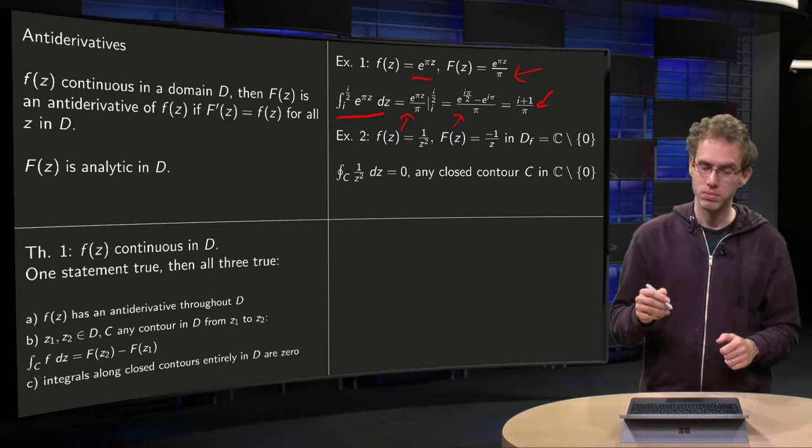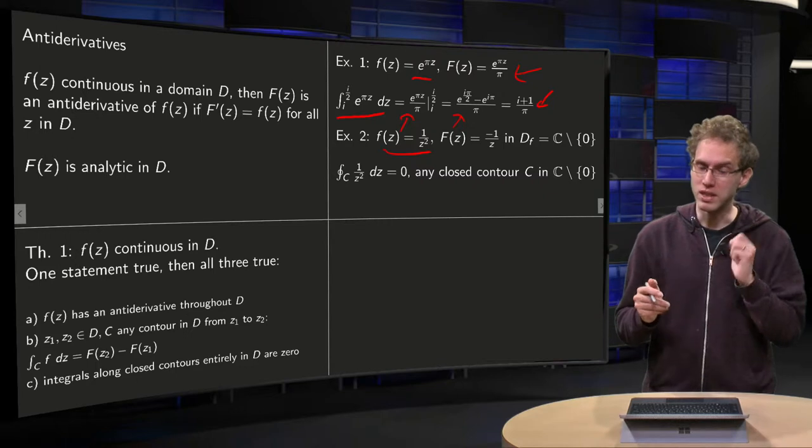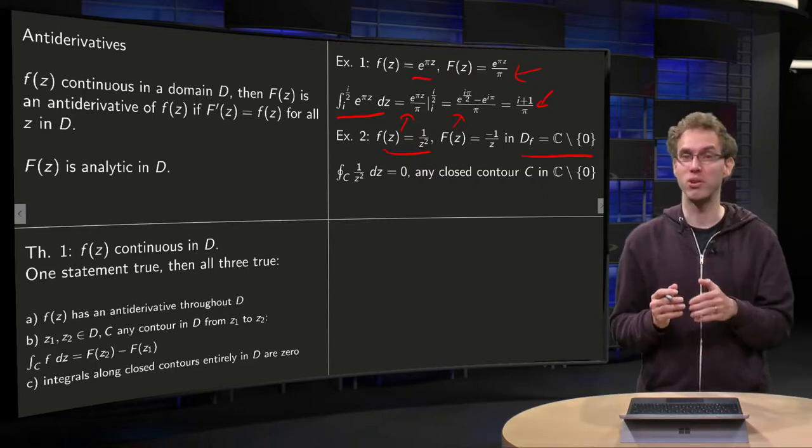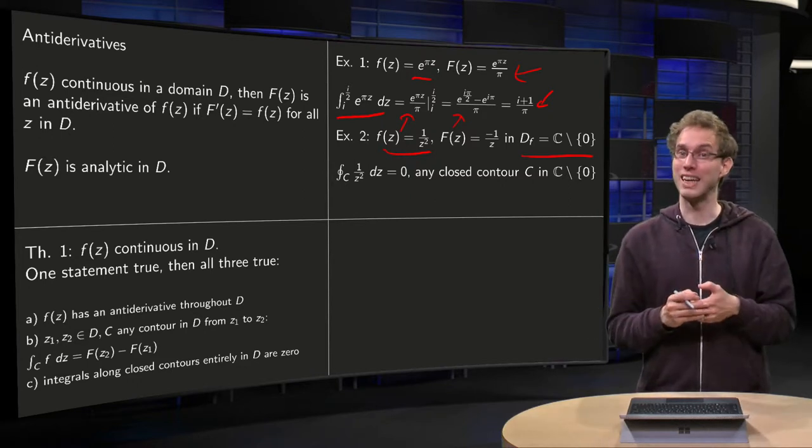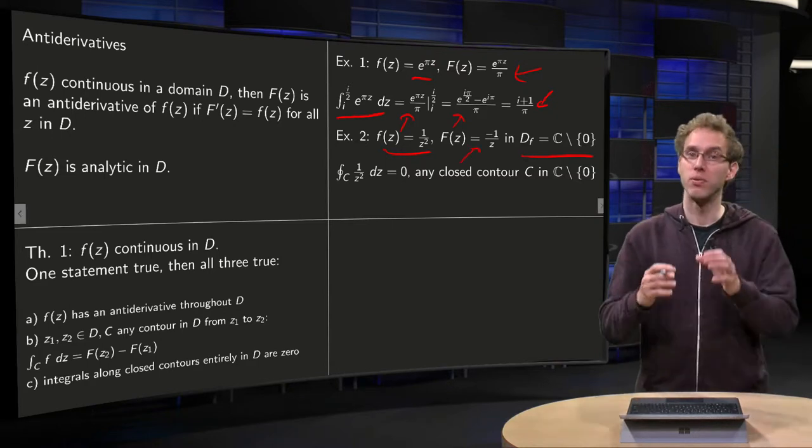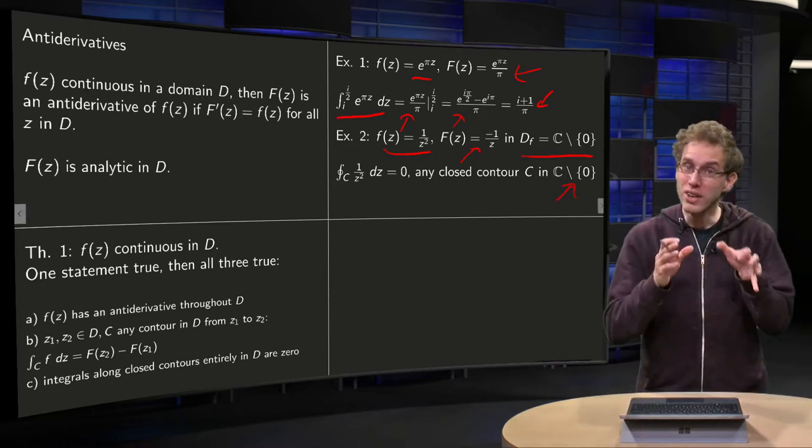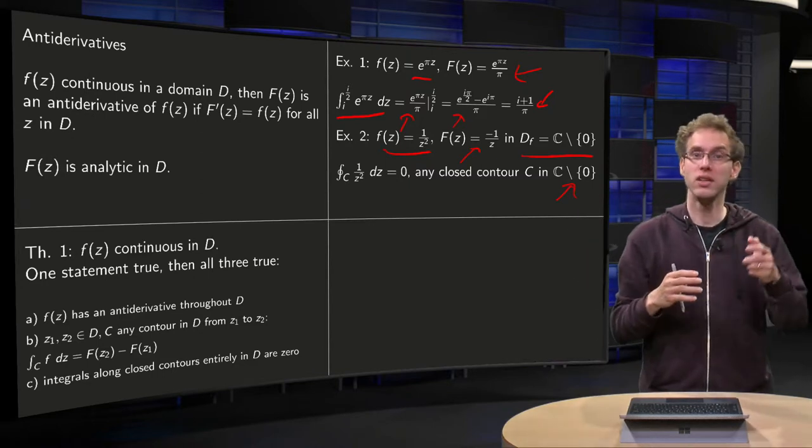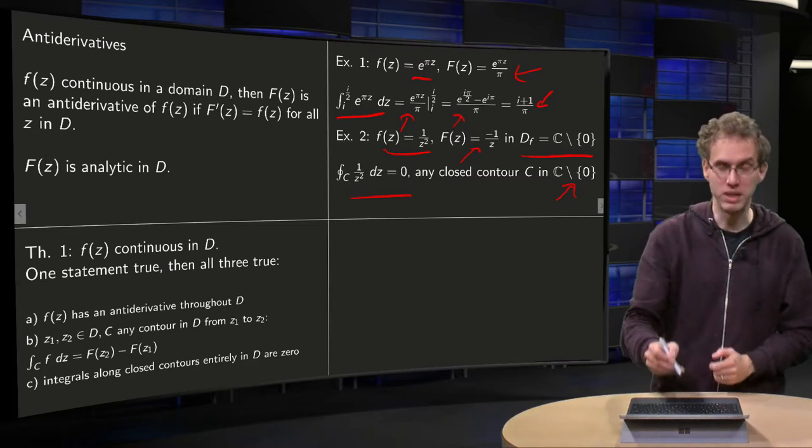Second example. Suppose we take f of z equals 1 over z squared. And now, pay attention, domain will be all of C, except for the origin. Yes, of course, because in the origin our f of z doesn't even exist. Then we have a capital F, an antiderivative minus 1 over z, which exists everywhere, except for zero. So then the theorem tells us that if you take any contour in C, as long as you do not go through the origin, then your integral will be zero.